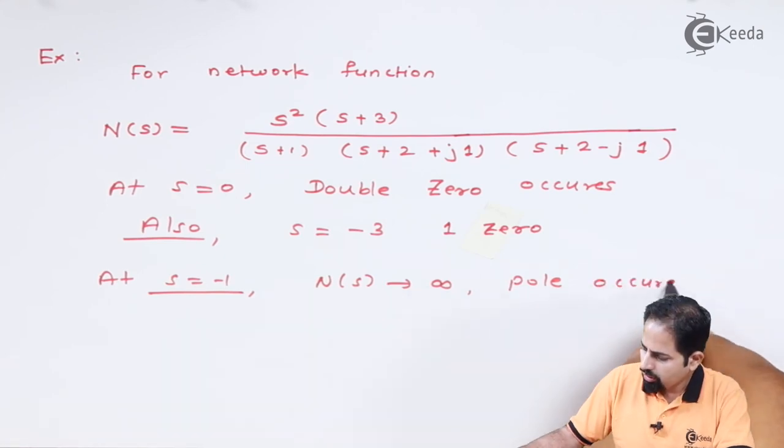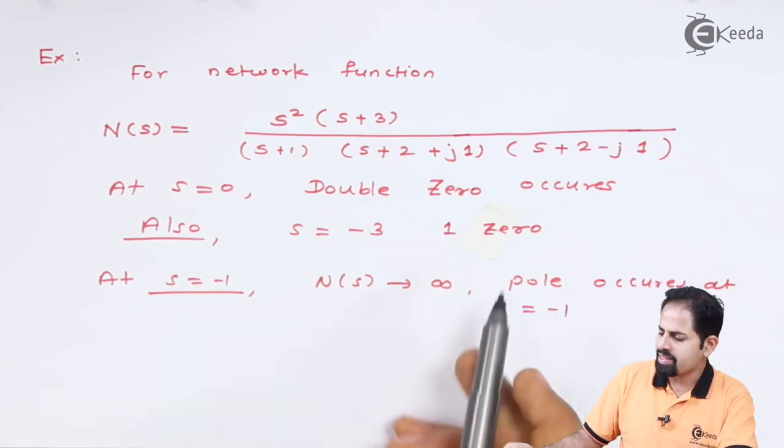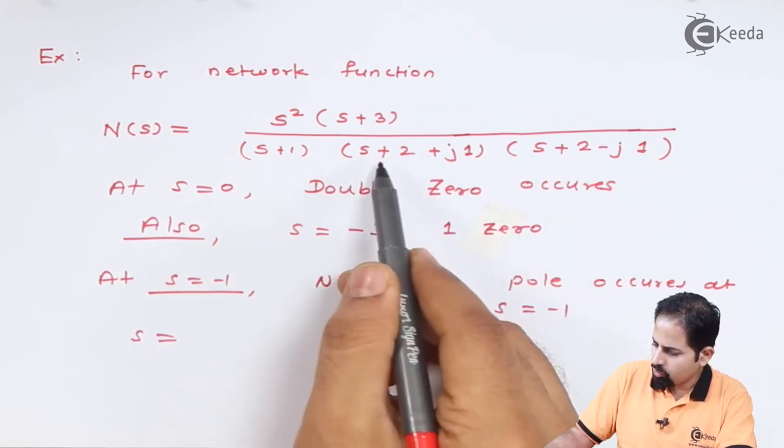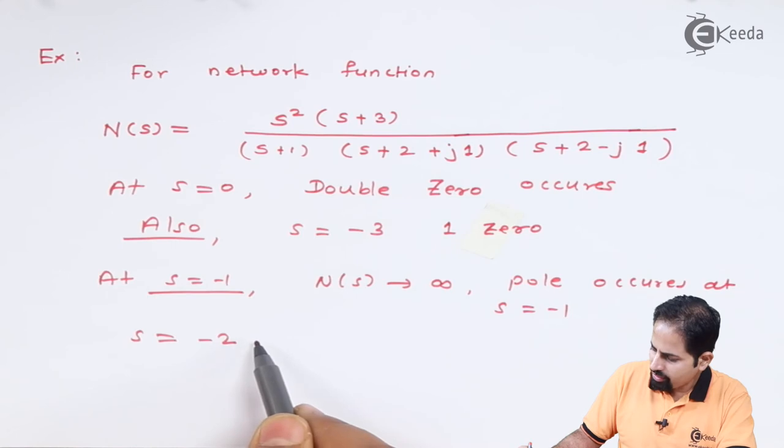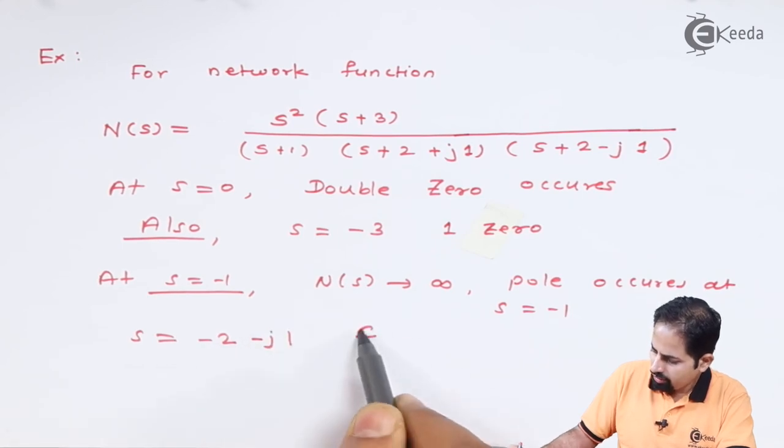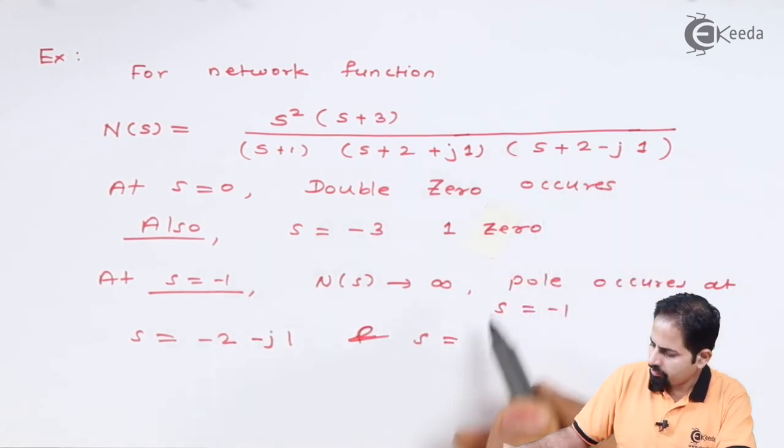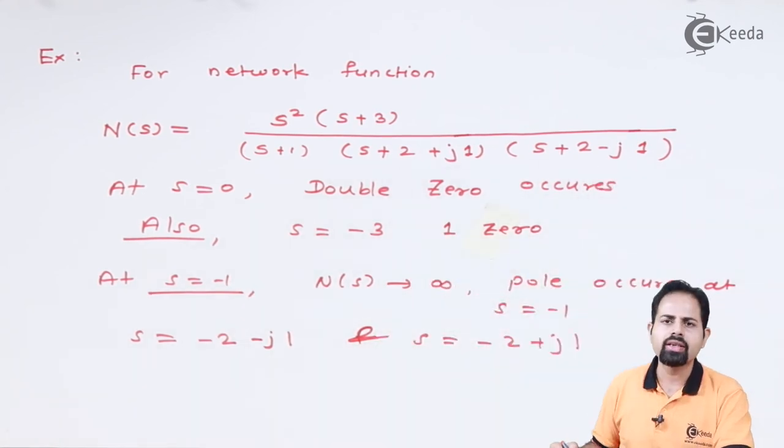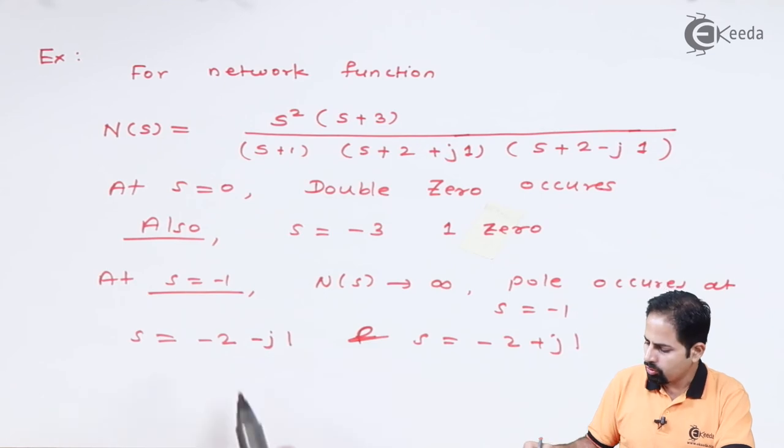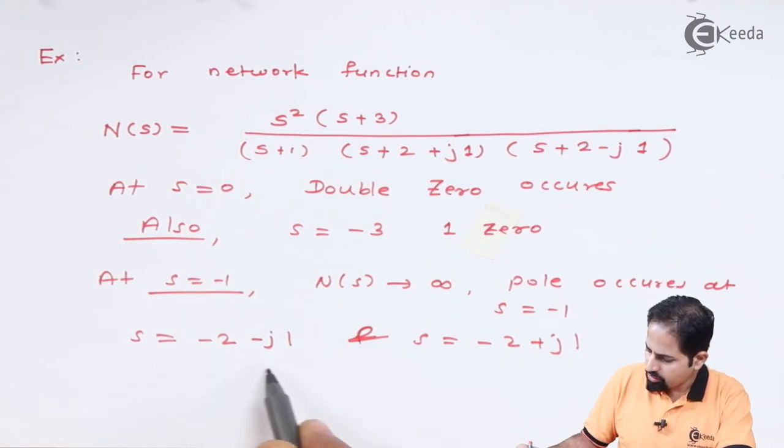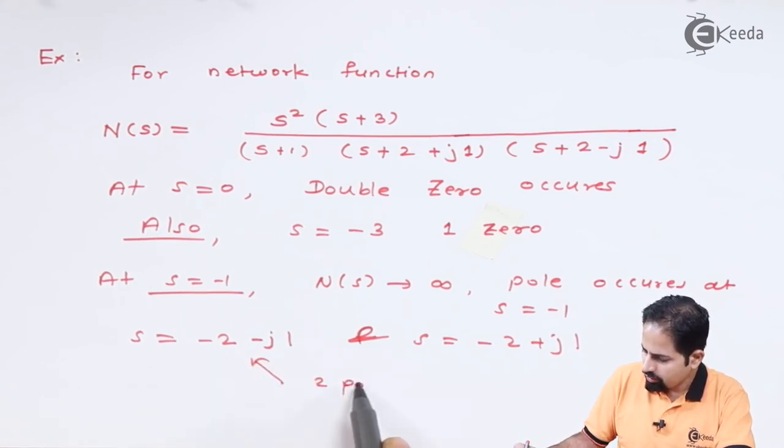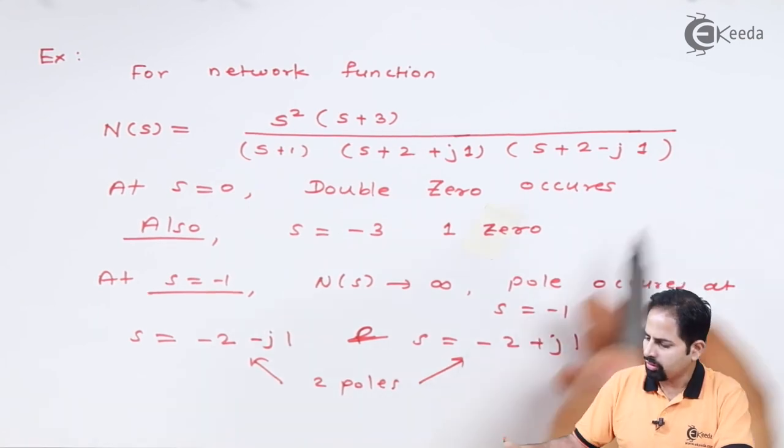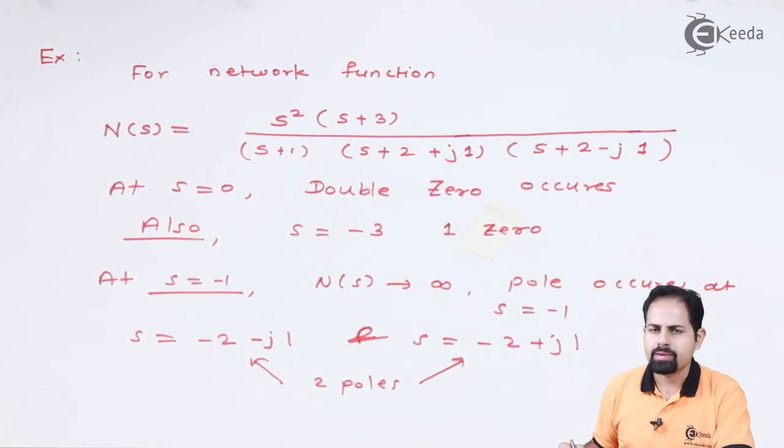And similarly here also you will have two more poles. So at s equal to -2 - j1 and s equal to -2 + j1, at both these values this denominator will again become 0. So these are two more poles. So this is how we calculate zeros and poles of a network function which I just explained.